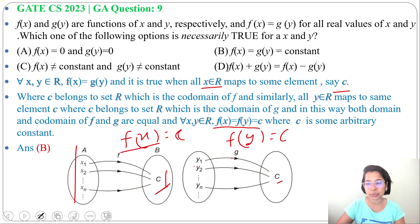Similarly y belongs to R maps to the same element c where c belongs to R. Here you can mark y maps to same element c, c is some arbitrary constant. So here c is codomain of both f and g, for function f and function g.